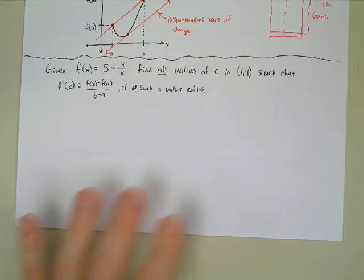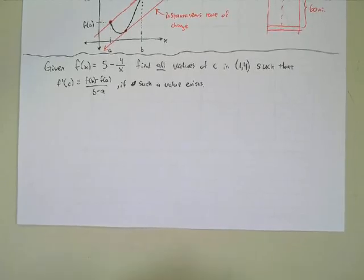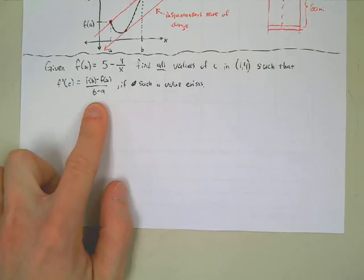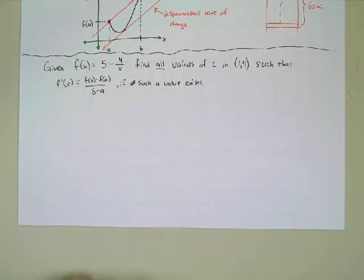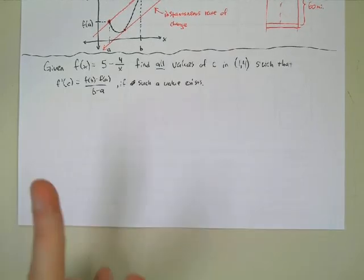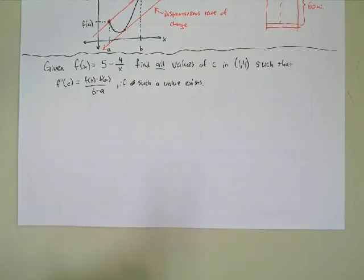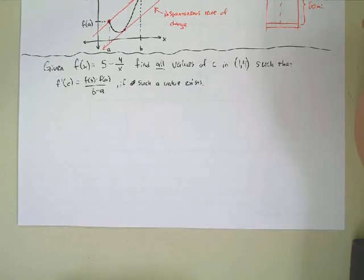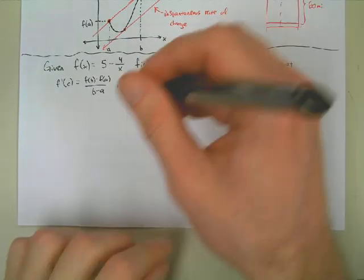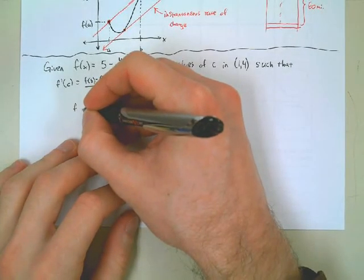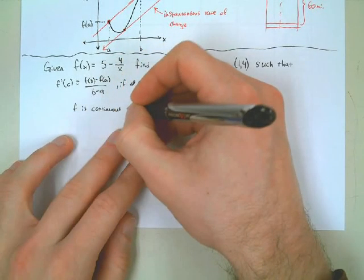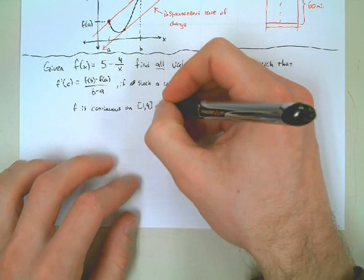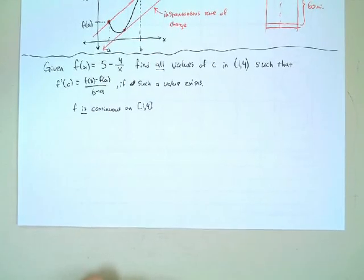Should we just jump right in and find the average rate of change? No — remember to see if the mean value theorem applies we first have to check two things: if the function is continuous on the closed interval [1, 4] and if the function is differentiable on the open interval (1, 4). Is it continuous? Yes, because on [1, 4] x never equals 0, so F is continuous on the closed interval [1, 4].